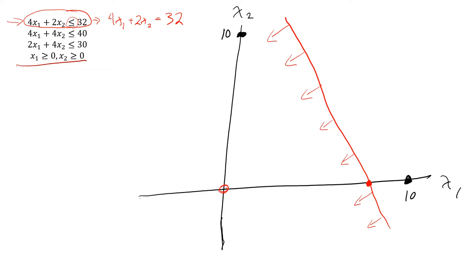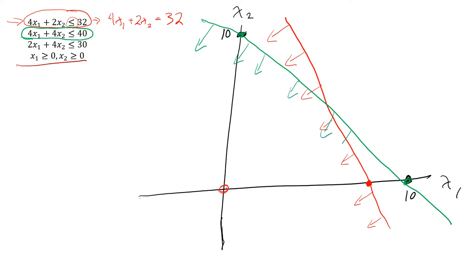Now let's repeat this for the next constraint: 4x1 plus 4x2 is less than or equal to 40. If x1 equals zero, x2 equals 10; if x2 equals zero, x1 equals 10 — so it goes through (0, 10) and (10, 0). Again, I test the point (0, 0): it satisfies that constraint, so I'm looking at that side of the green line as well. I'm starting to limit my area.